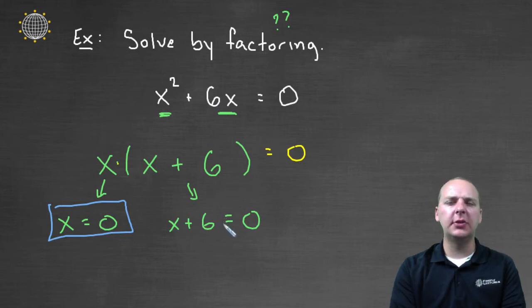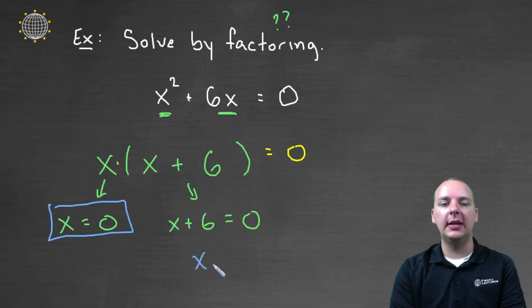The second equation, we have to solve for x a little bit. We'll subtract 6 to the right-hand side and get x = -6. That would be your other solution.